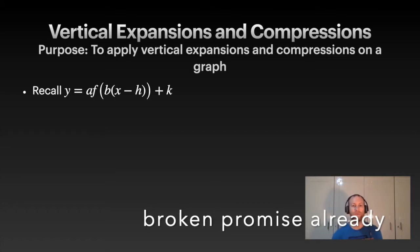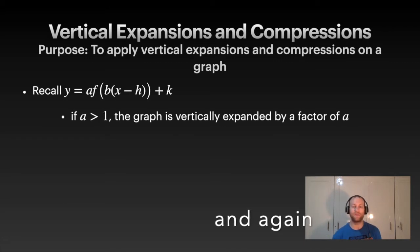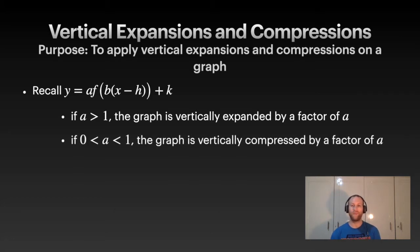y equals a f of (b(x - h)) + k. If a is bigger than 1, then the graph is going to vertically expand by a factor of whatever that value is. If a is 3, we are going to expand the graph vertically by a factor of 3. Now, if a is between 0 and 1, we are going to compress by whatever that is. If it's 1 over 3, then we compress it by a factor of 1 over 3, or you can also say you compress it by a factor of 3. It's just 3 times as small.